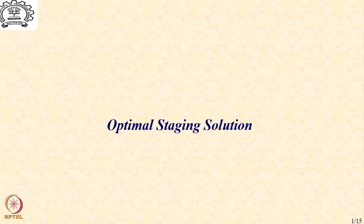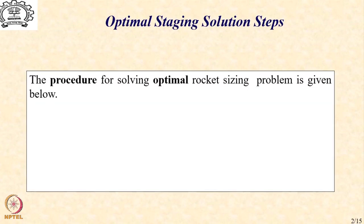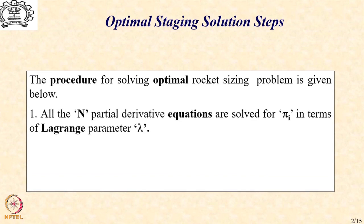Let us begin our discussion on the optimal staging solution. Given below is a broad procedure for solving the rocket sizing problem in the present context. The first step is that we solve all n partial derivative equations for individual πᵢ's in terms of the Lagrange parameter λ. So all the n design variables πᵢ's are expressed in terms of the Lagrange parameter λ.